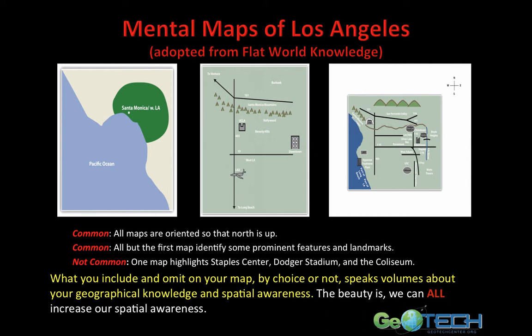My kids right now are not very spatially aware — all they're aware of is getting to Staples Center, getting inside the arena, getting a hot dog or a slice of pizza, and sitting down to see a Lakers player. But the beauty is that we can all increase our spatial awareness. Over time it'll change. In a couple of years I can ask them: where's LAX? Where is the Coliseum? Where's Dodger Stadium? Where is Grauman's Chinese Theater? As we continue to go on our journey and I point out landmarks and features, their mental map of Los Angeles will grow and grow as their experience develops further.